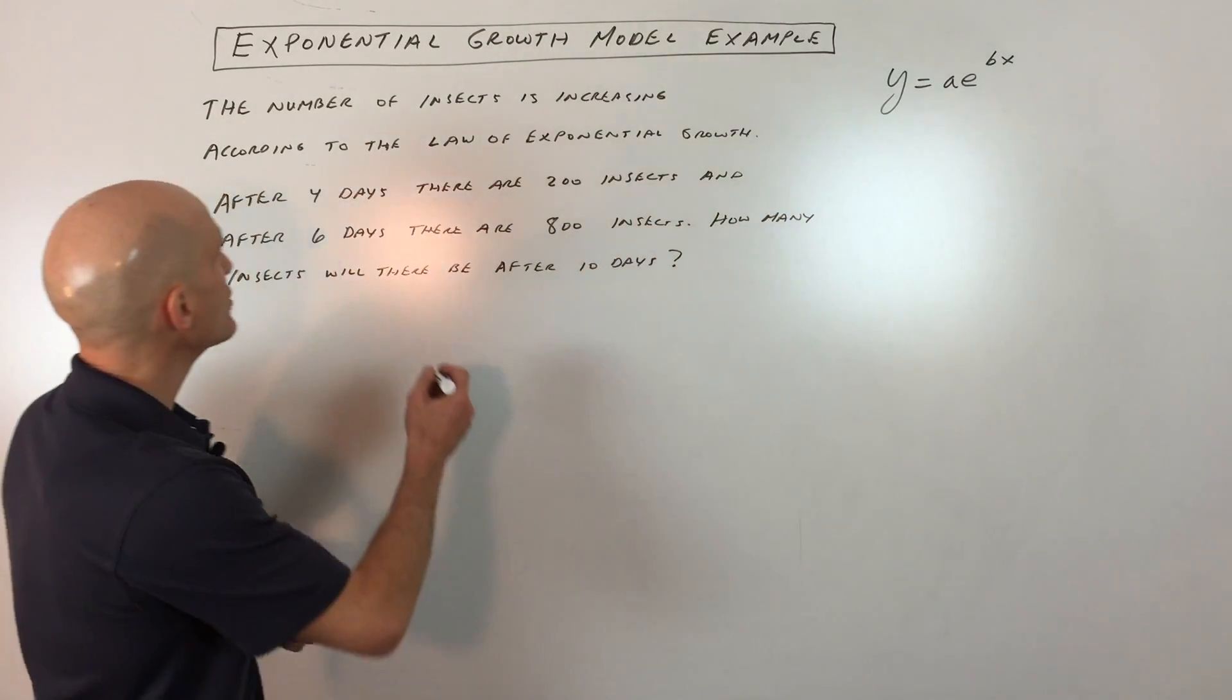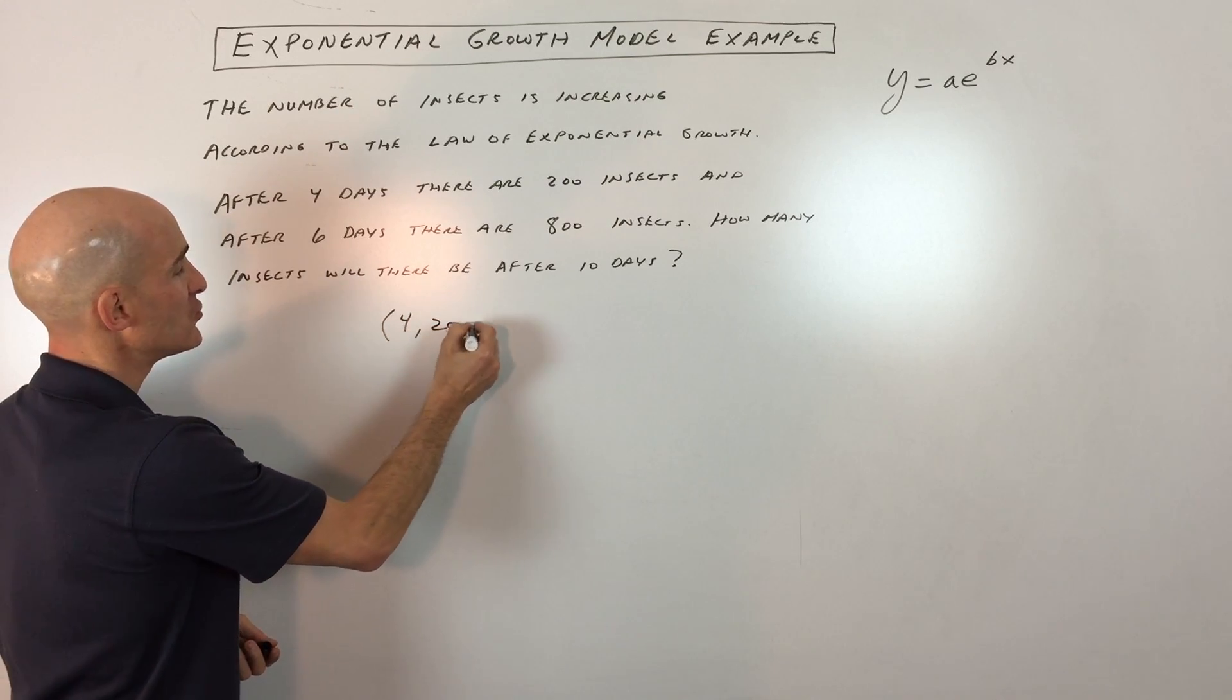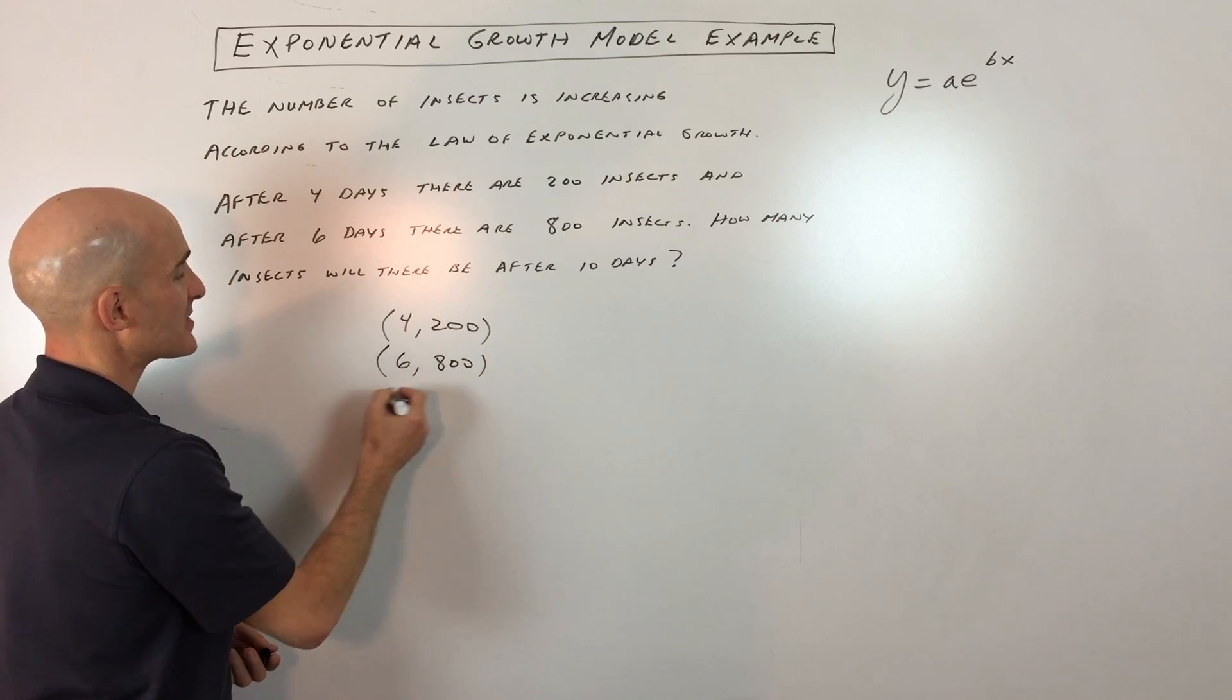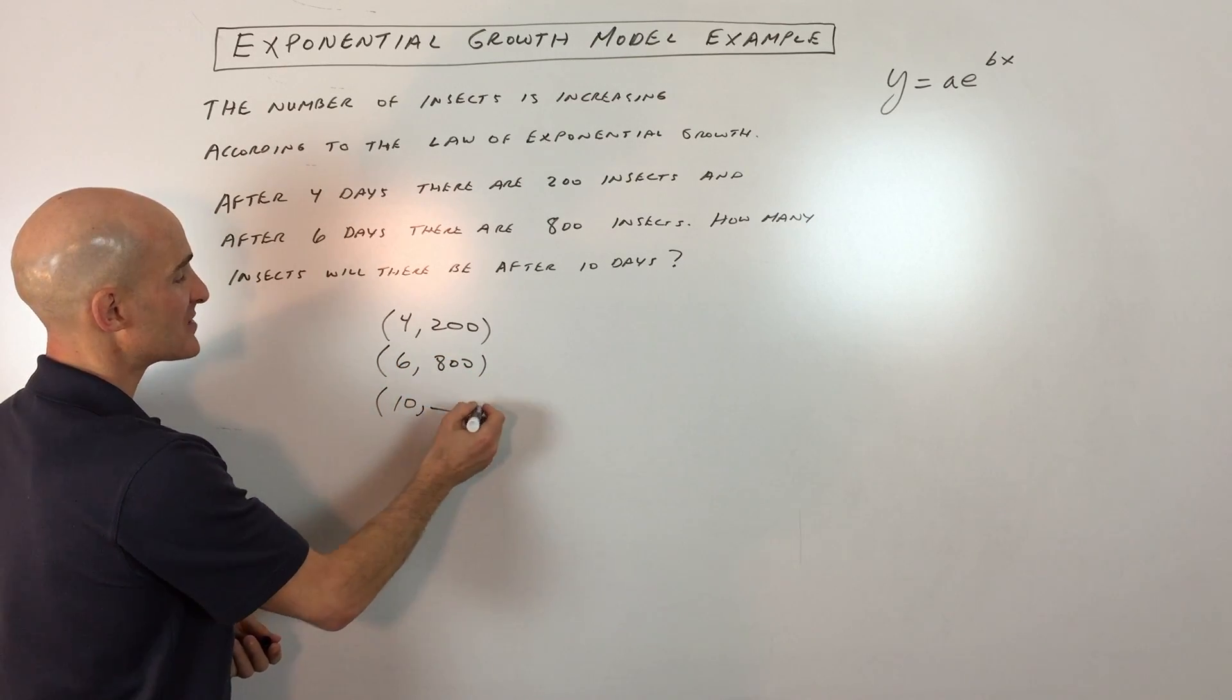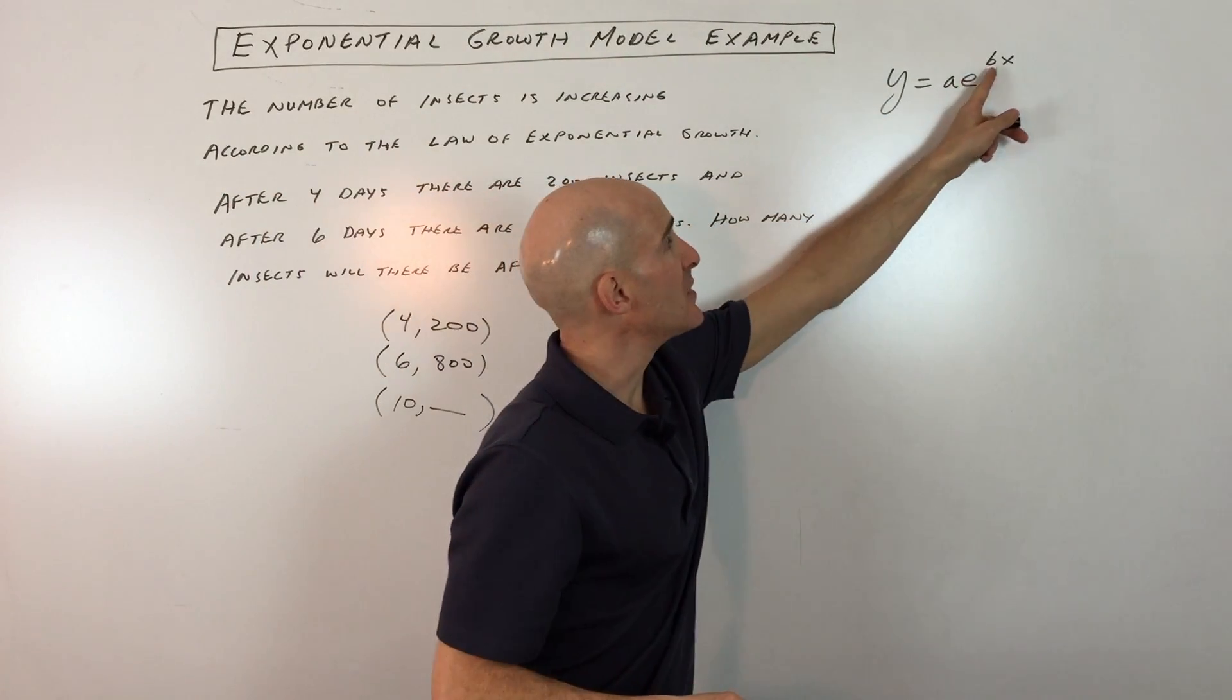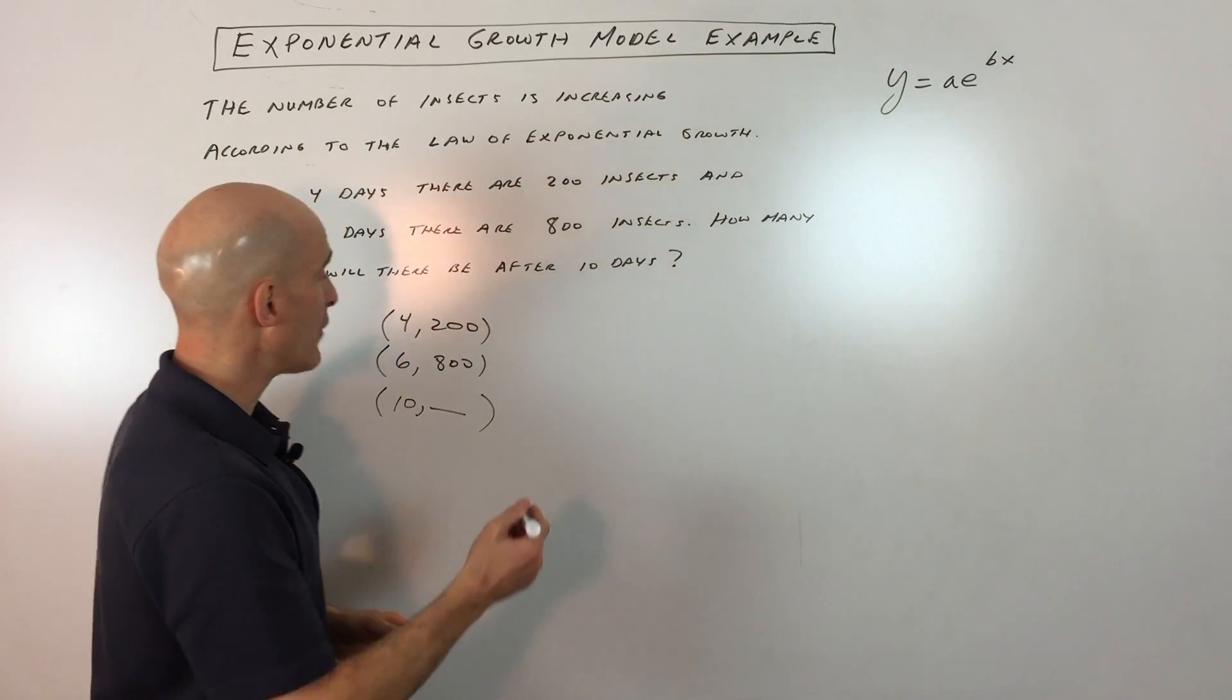What they're giving us here are basically a couple of coordinates: after four days, there are 200 insects, and after six days, there are 800 insects. We're trying to figure out how many there will be after 10 days. Let's solve for a and b. These are our unknowns. Whenever you have two variables, you need two equations to solve for them.